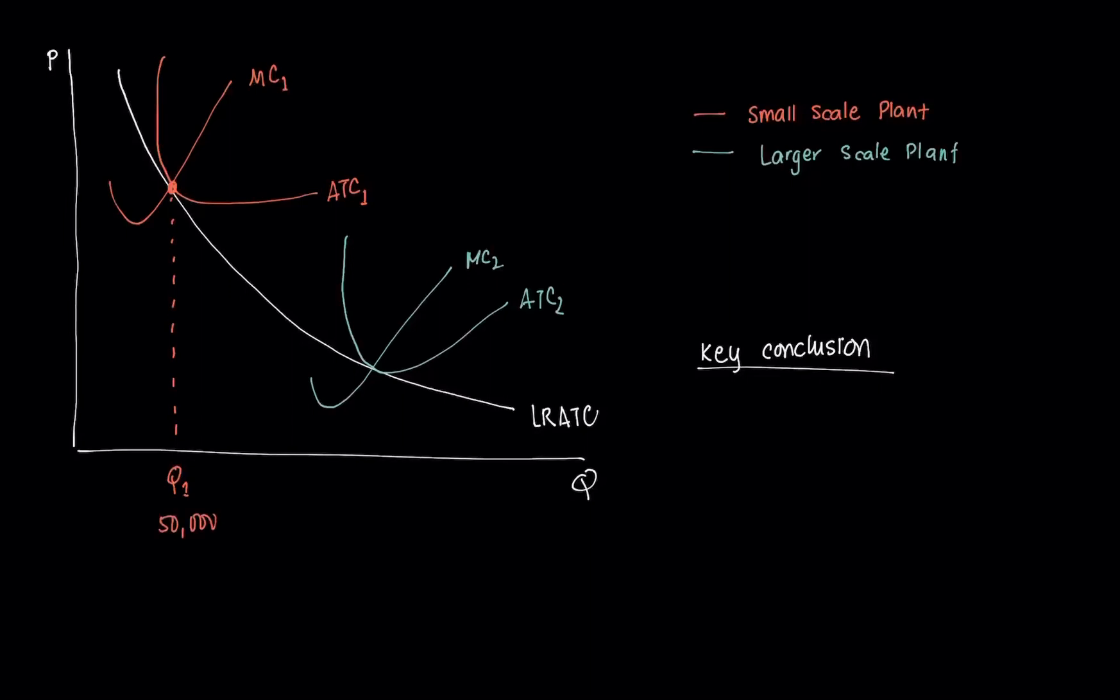At this quantity, the price that will be charged is P1. Now, when we get to a larger scale plant, because of the economies of scale, the monopolist will be able to provide Q2, which is say 250,000 units, just an arbitrary number.